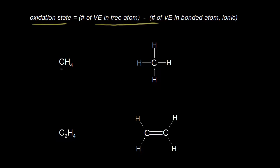Let's start with methane and find the oxidation state of carbon in methane. One approach is a general chemistry approach where we know that hydrogen usually has an oxidation state of plus one. We have four hydrogens for a total of plus four. The sum has to equal zero, so carbon's oxidation state must be minus four, since we have only one carbon here.